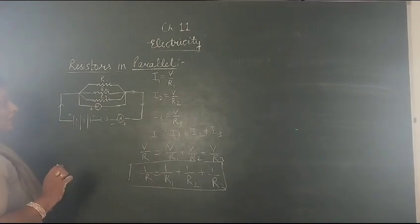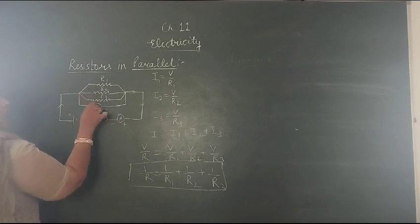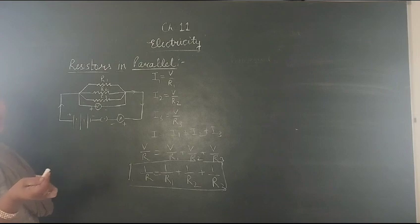If they are connected in parallel, then the amount of current passing through them will split into three. R1 will get current I1, R2 will get I2, and R3 will get I3.